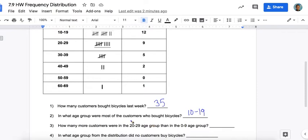Question three: how many more customers were in the 20 to 29 age group than the 0 to 9 age group? You had to look here, which was 9. And you can't see it, but it's up here and it was 6. So you should have done 9 minus 6, which is 3.